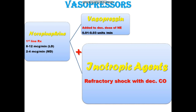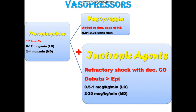Inotropic drugs are used when the patient has refractory shock with decreased cardiac output. The inotropic agents that can be used are either Dobutamine or epinephrine — Dobutamine is preferred over epinephrine. The loading dose of Dobutamine is 0.5 to 1 microgram per kg per minute.